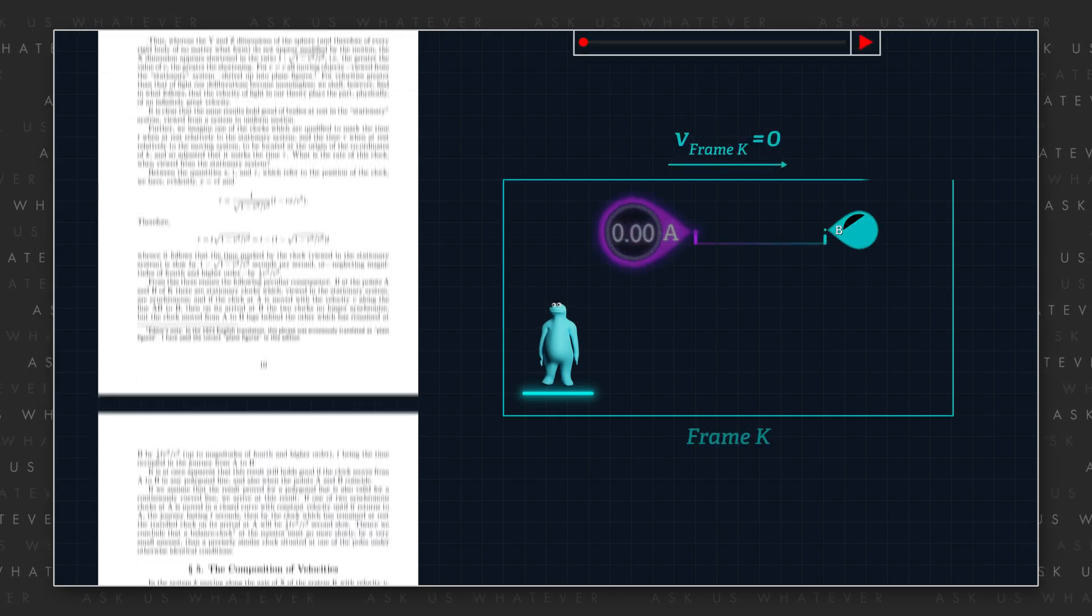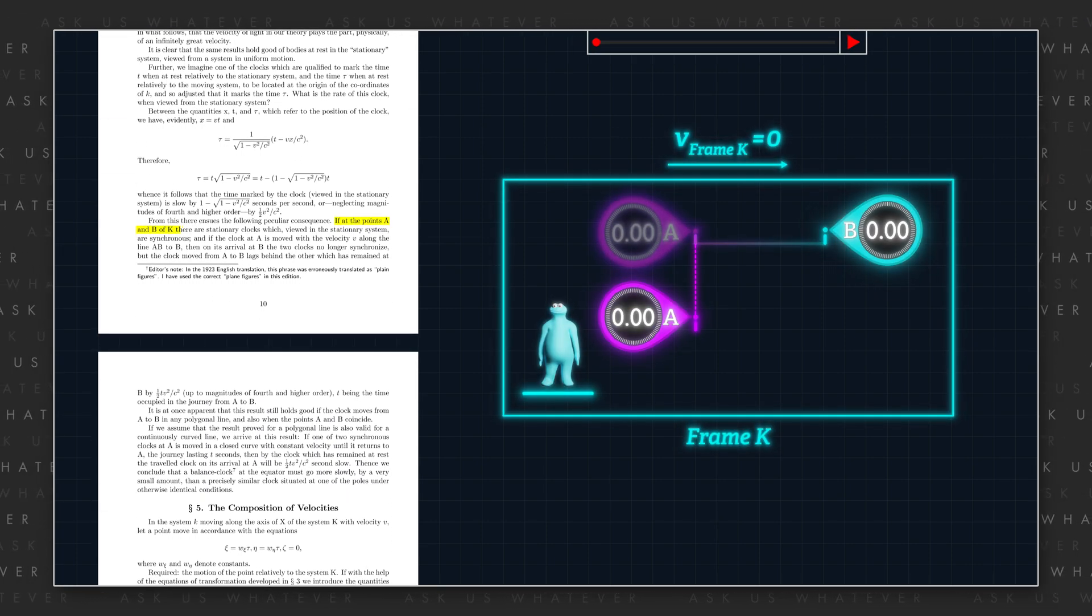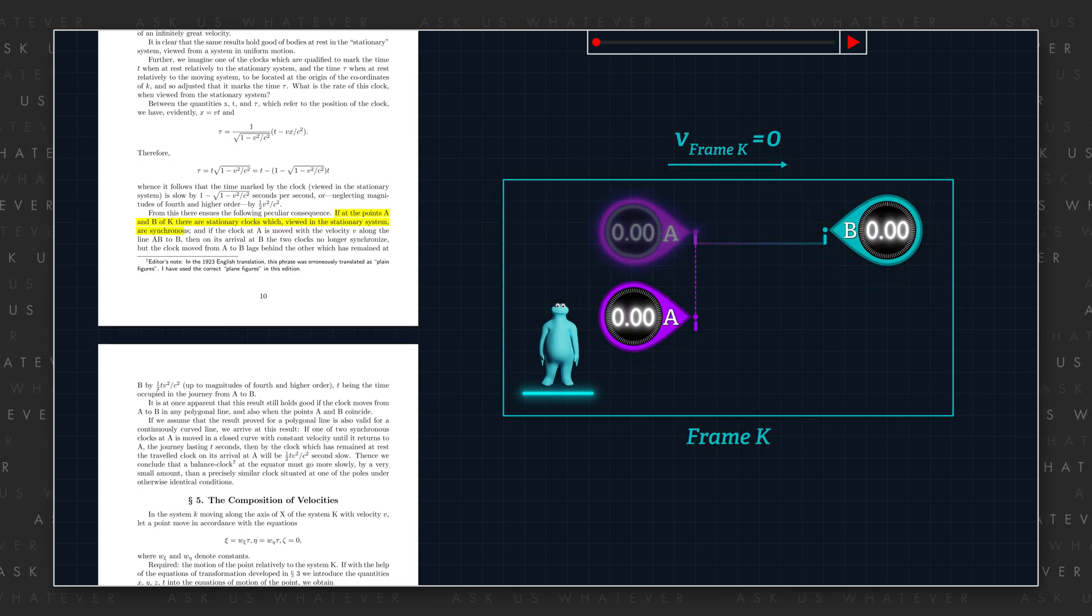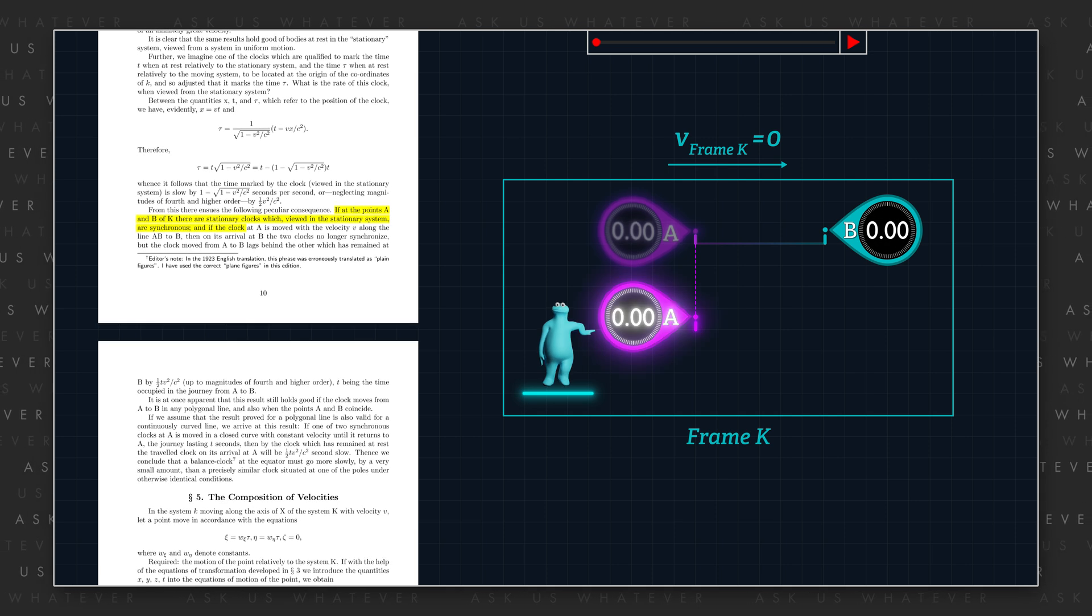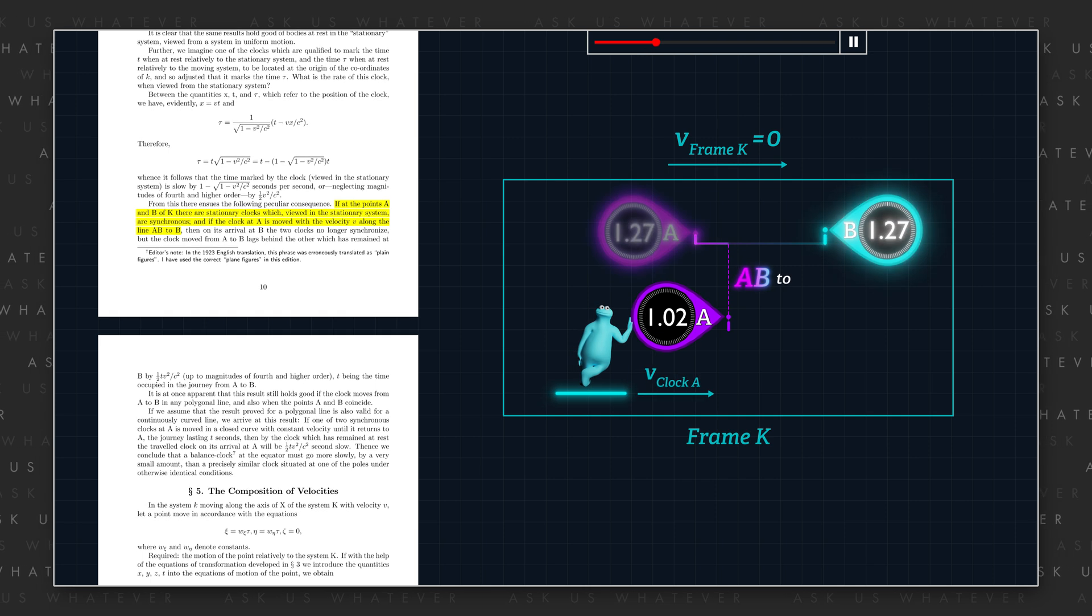Now, was that luck or was that genius? Let's take a look at that. Einstein stated in section 4 of his 1905 relativity paper, "If at the points A and B of K, there are stationary clocks which, viewed in the stationary system, are synchronous, and if the clock at A is moved with the velocity V along the line AB to B,"